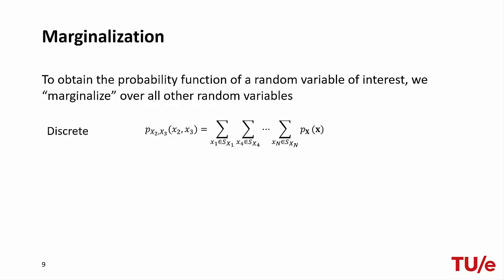As for pairs of random variables, marginalization is a useful operation where we want to obtain the probability model of one or more random variables of interest. For example, if we have the joint PMF of n random variables and we want to obtain the joint PMF of only X2 and X3, we simply need to sum the full model over all other variables that are not of interest. In the case of continuous random variables, the summation simply becomes an integral.